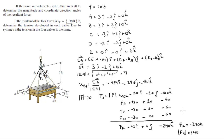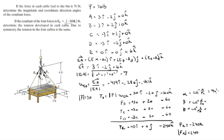The magnitude is obviously 240. The coordinate angles are the cosine inverse of each component over the magnitude. There's no x or y component, so those angles are both 90°, because cosine of 0 over 240 is 90°. The z-angle is 180° because the force points straight down.